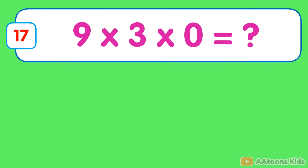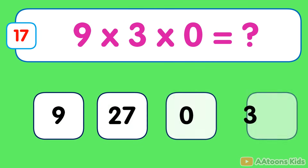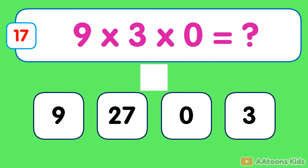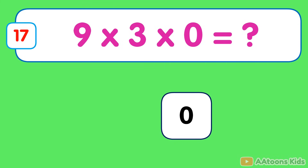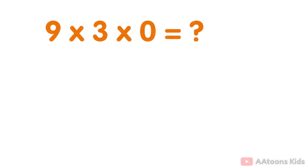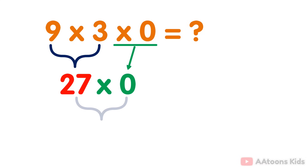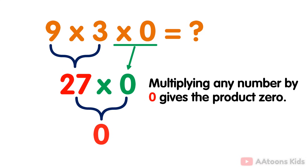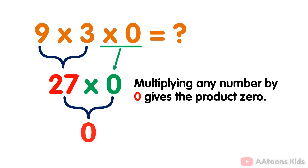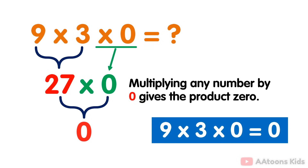9 multiplied by 3 multiplied by 0. The answer is 0. Simply multiply the numbers 9 and 3 which equals 27. Then you multiply the result 27 by 0. Multiplying any number by 0 gives the product 0. Therefore the answer to 9 multiplied by 3 multiplied by 0 is 0.